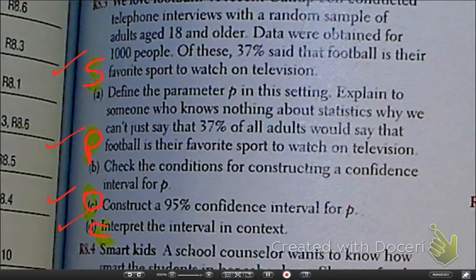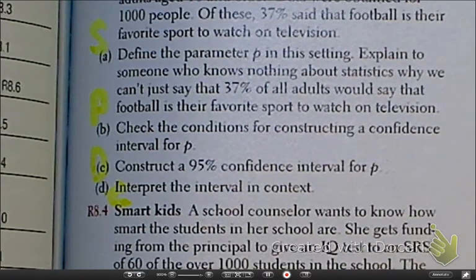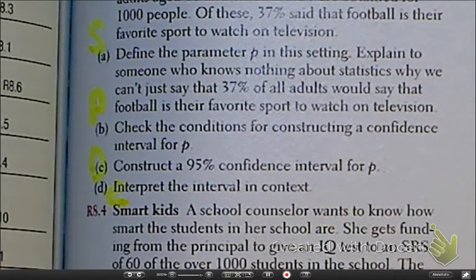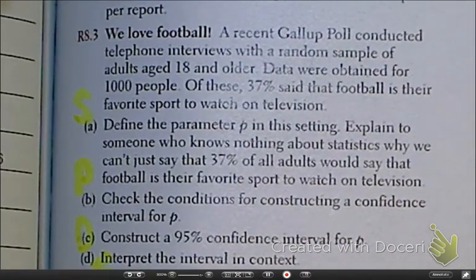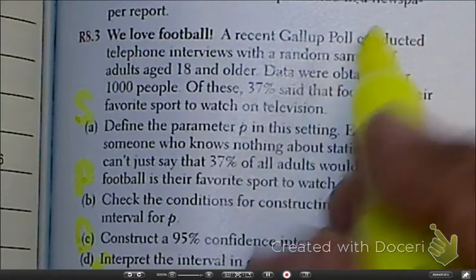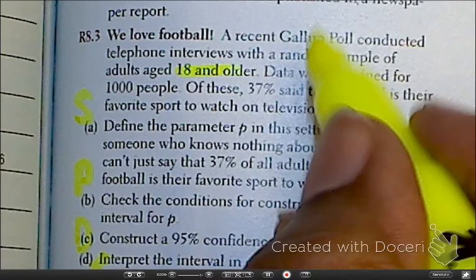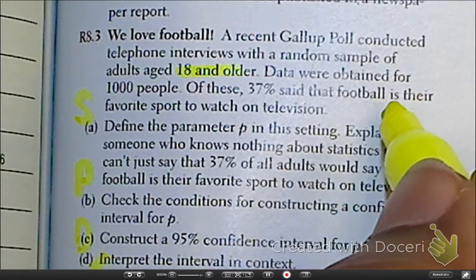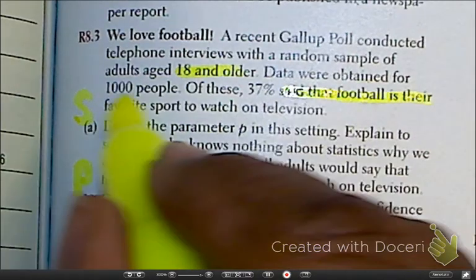Okay, so let's get started. Define the parameter, the do. The parameter in this particular case is the proportion of all adults. Let's look at it right here. It is the adults that are 18, the adults 18 years or older, that said they favor football.